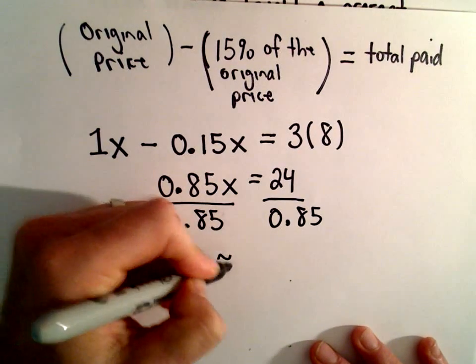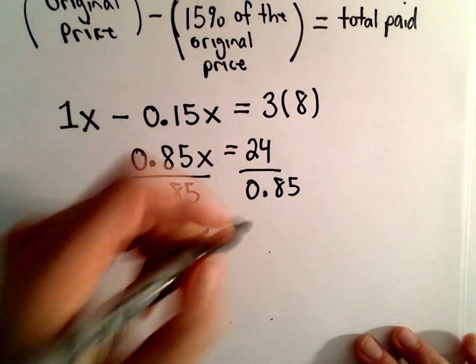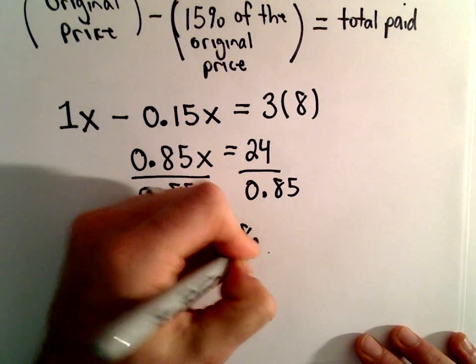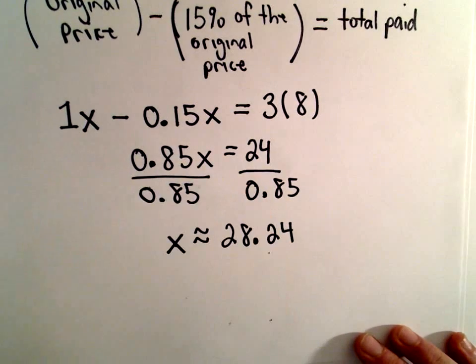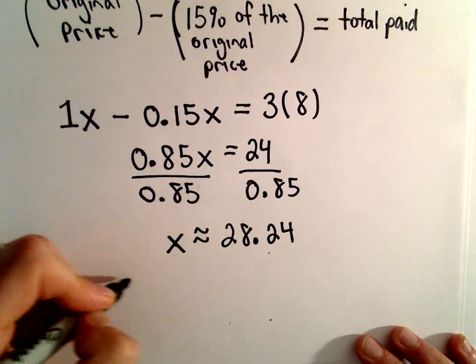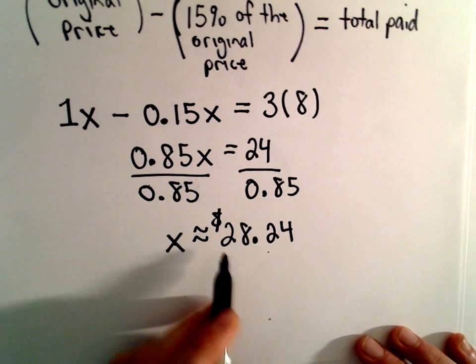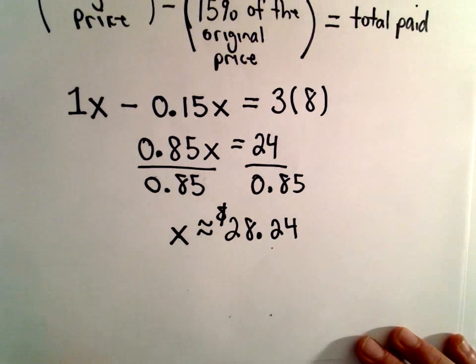I'm going to round the right side because this is not a nice whole number. I'm getting this to be roughly equal to 28.24 after I round to the nearest penny. So the original price is roughly equal to $28.24.